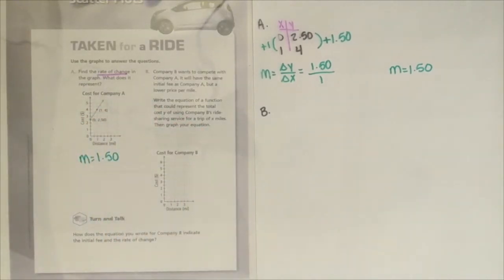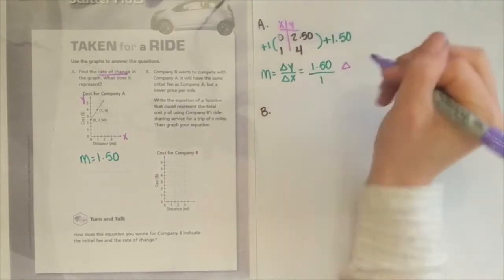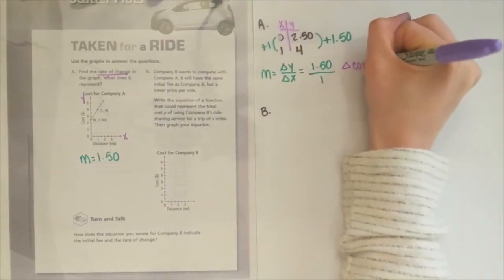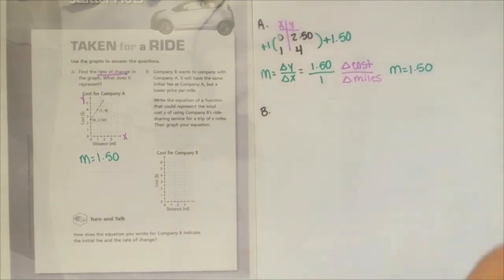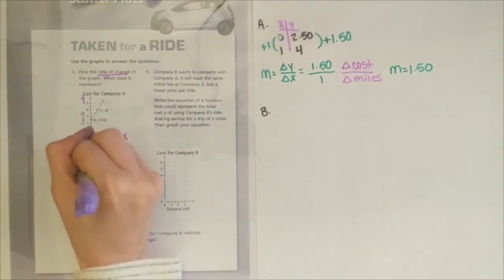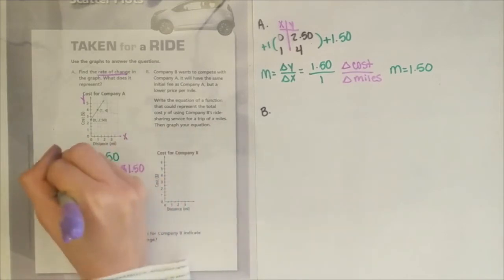The second part of this question asks us, what does it represent? Well, our x-axis is labeled distance in miles, and our y-axis is labeled cost in dollars. We can use this to help us interpret what our slope means to us by considering our change in y is change in cost, and our change in x is change in distance in miles. So to interpret this, we have change in cost over change in miles. Well, our cost change is $1.50 every one mile. So it will cost $1.50 for every mile.